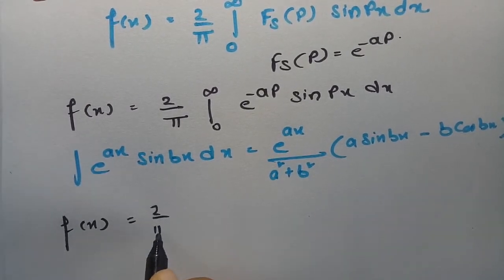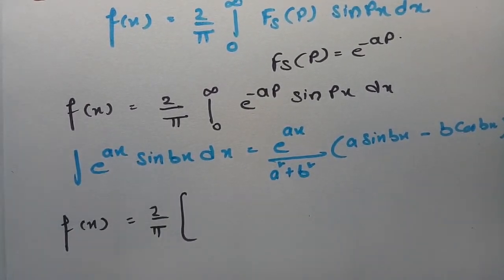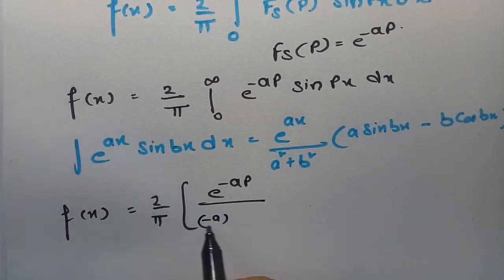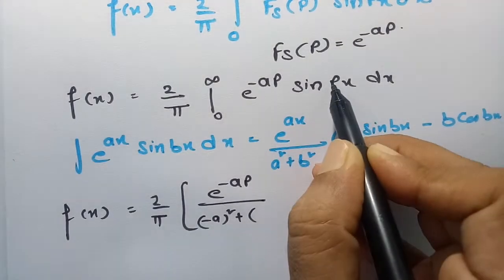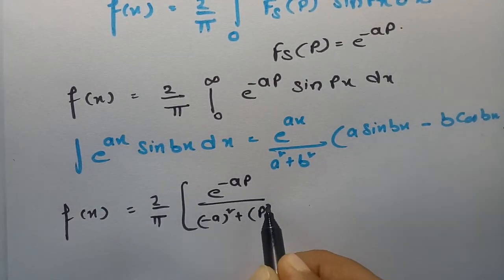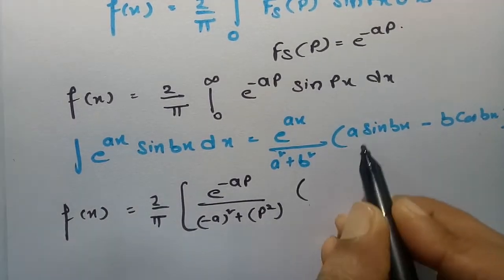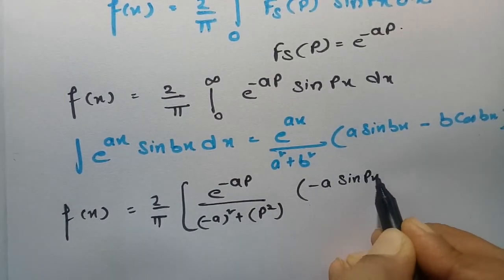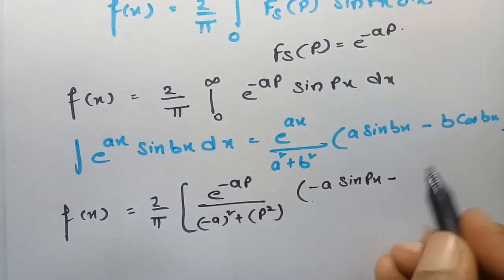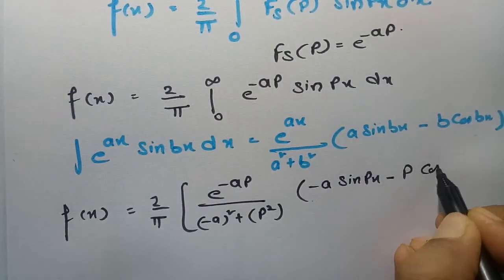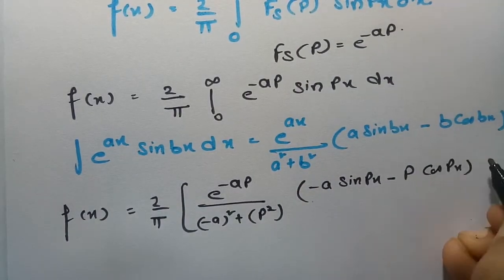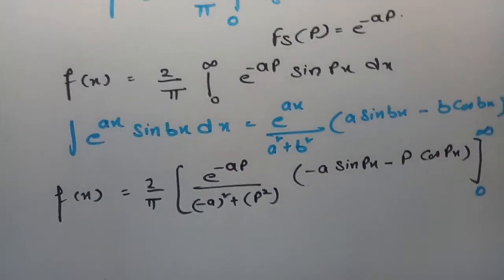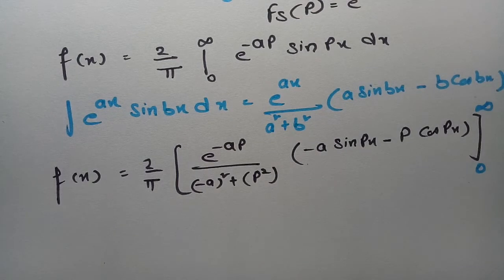Using this formula, f(x) = (2/π) times: e^(−ap) divided by ((−a)² + p²), multiplied by (−a·sin(px) − p·cos(px)), evaluated between the limits 0 to infinity.